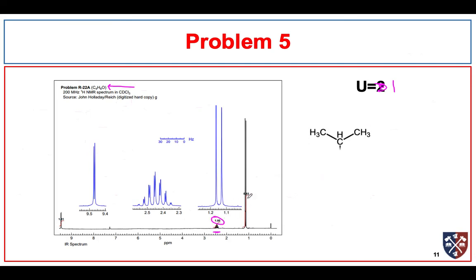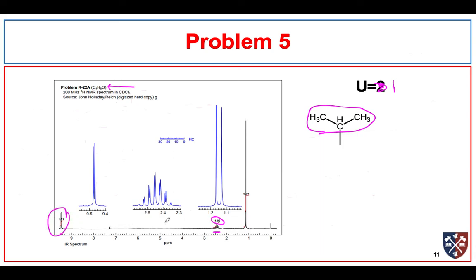This pattern — hopefully we're starting to recognize it — is an isopropyl group. That's very common to see. We also have a peak way out past 9 ppm, and we know that the only thing that comes out there are aldehydes. We have C4: 1, 2, 3, 4 carbons. H8: 3, 6, 7, 8 hydrogens. And our oxygen.